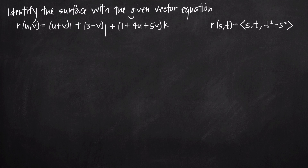In this video, we're going to be talking about how to identify the shape of a surface with a given vector equation. We've got two problems. We're going to look at the surface of the vector equation given by R of the parameters u and v, and then look at a second example to give you a couple of ideas about how to go about identifying the surface of these vector equations.